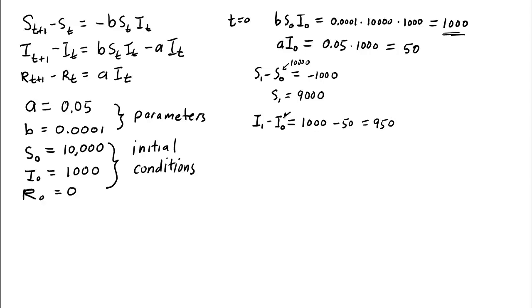And since I sub 0 was 1,000, and we gained 950, that means at the end of time step 1, we have 1,950 infected folks.